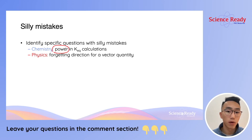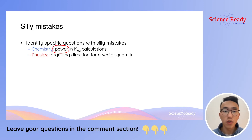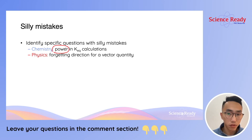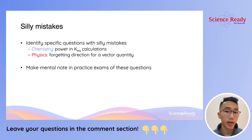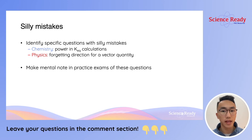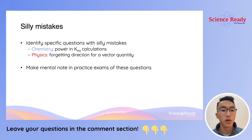This applies to physics as well, both for calculation and non-calculation silly mistakes. If you've forgotten the direction for a vector quantity — for example, magnetic field strength — in the future, whenever you're writing magnetic field strength, you should make a mental reminder that it is a vector quantity and you should also include a direction. To reiterate: you'll find it very helpful to identify and describe the type of silly mistake, because that will allow you to make a mental reminder in future assessments when you come across the same type of question.